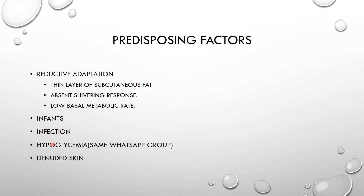Then hypoglycemia — we like to say hypoglycemia and hypothermia are in the same WhatsApp group. Because if the patient is hypoglycemic, it means they cannot increase their basal metabolic rate. Or if they are to increase their basal metabolic rate, they will need glucose to raise their temperature. So if the patient is hypoglycemic, that will make them hypothermic and vice versa.